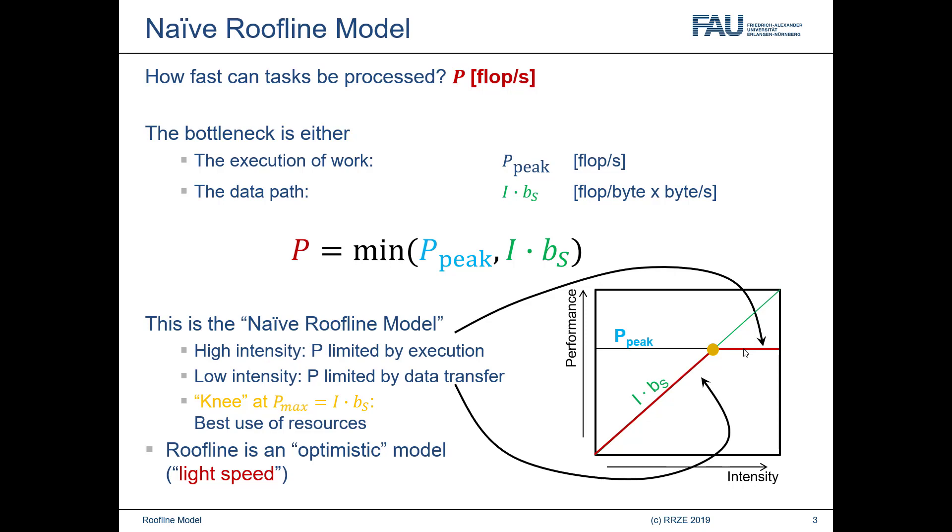It's very important to understand that the roofline model is an optimistic model. This prediction p, as a minimum of ppeak and i times bs, is a prediction for the light speed of the computation. Light speed in the true sense, light speed is something that cannot be surpassed. Your program can never run faster than what the roofline model predicts. This is entirely self-evident because ppeak is obviously an upper limit for the performance, and i times bs is also an upper limit. The program can never run faster than i times bs. Which means, automatically, that if you set up a roofline model and you measure the performance, and if the performance is higher than what the roofline model predicted, something must be wrong.